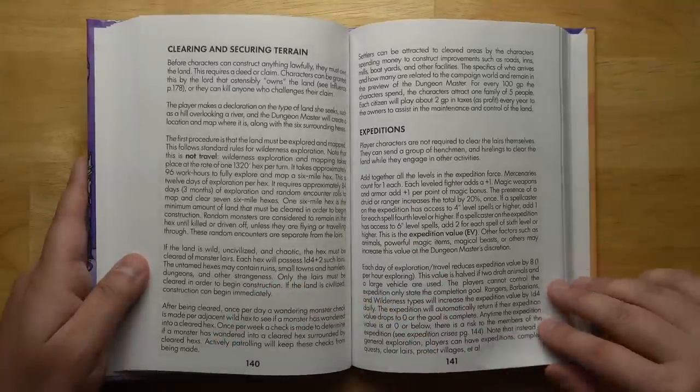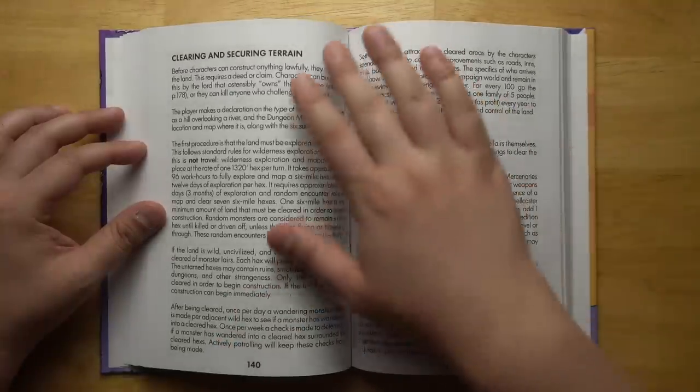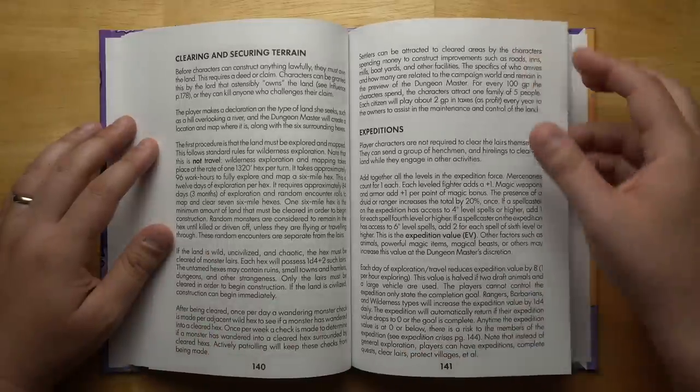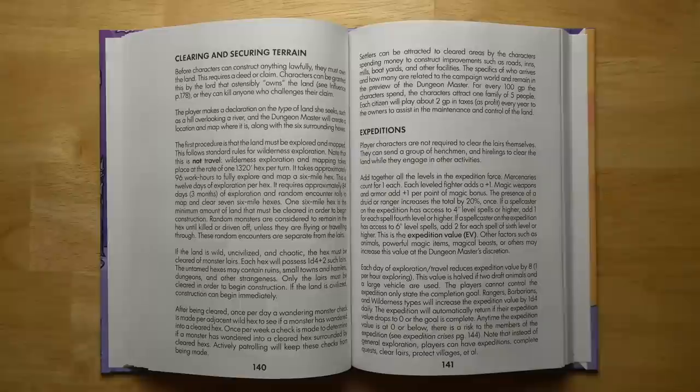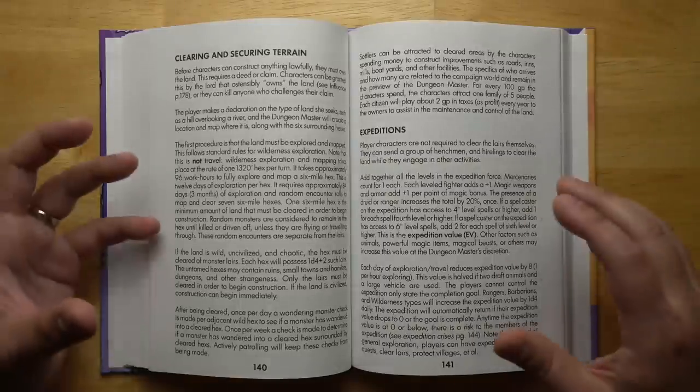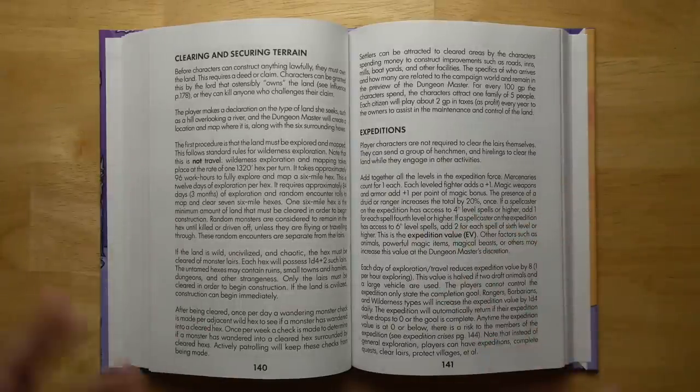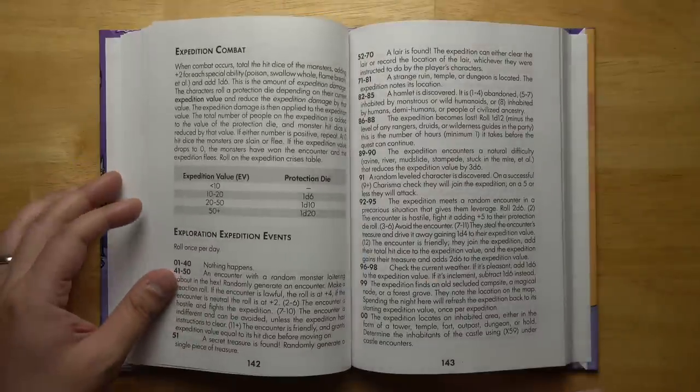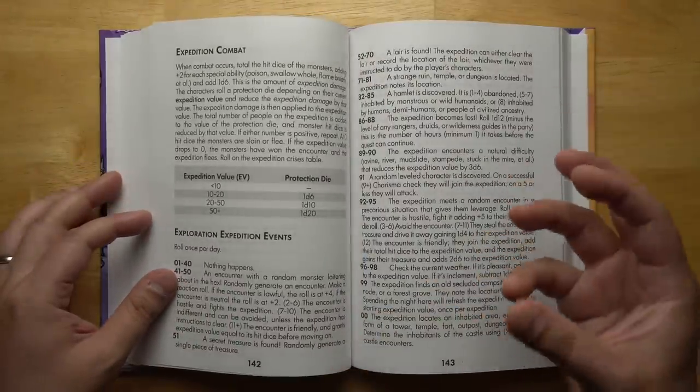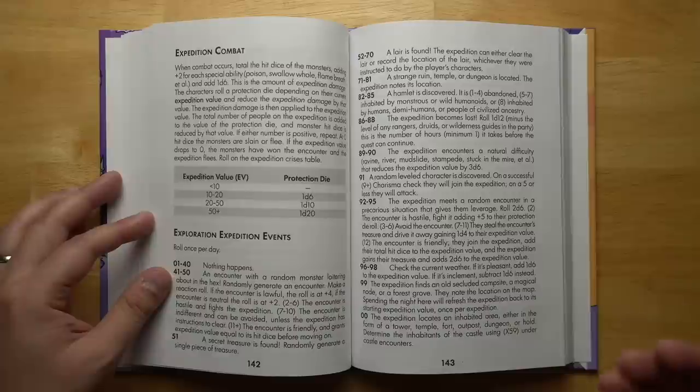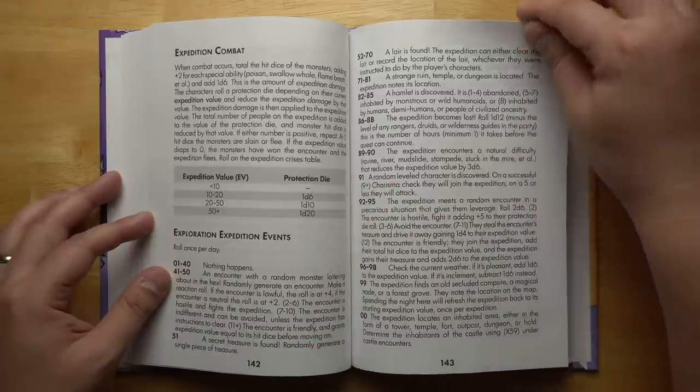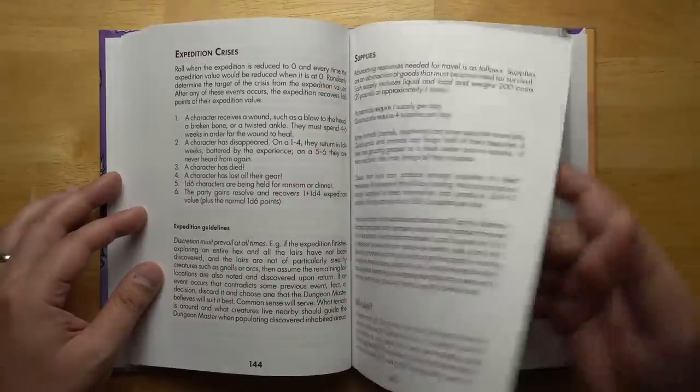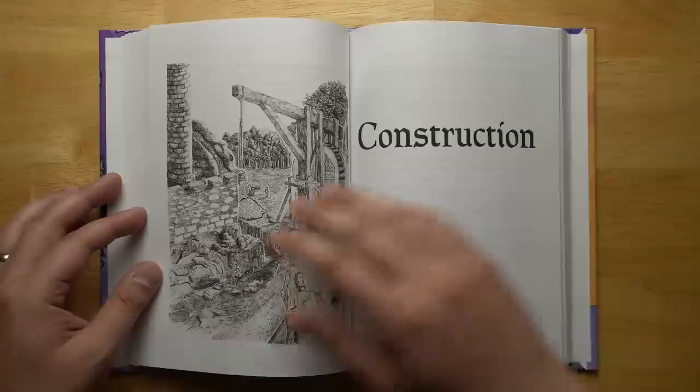Rules for mining and creating your own mine that you can extract wealth from. Again, that's a little too complex for me, but you could always simplify it. There's a whole section here on clearing and securing terrain, because if you want to start constructing buildings, you'll need to clear out the hexes around it, and a system for expeditions. What this does is abstract the whole process of getting together a band of fighters and taking out all the beholders and so on nearby where you want to build your castle.